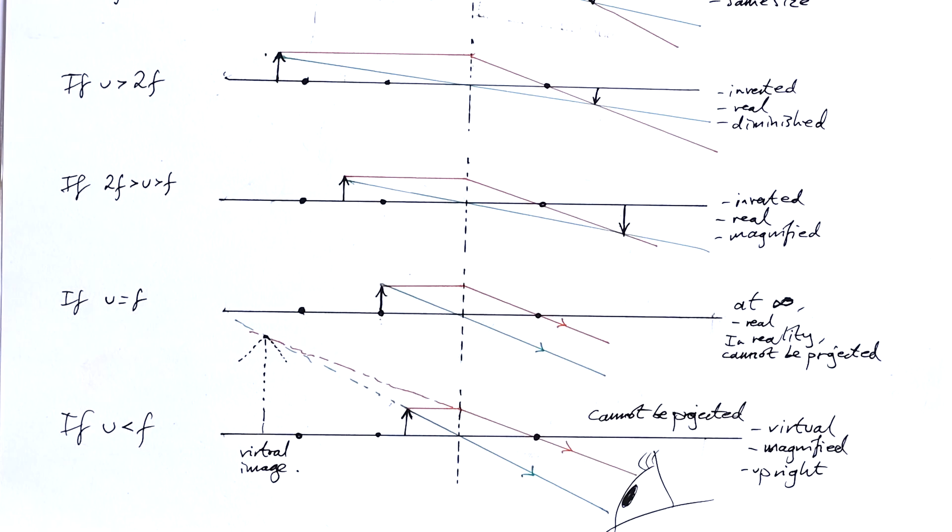An easy way of remembering this: if the light rays converge on the same side as the object, then it's a virtual image and can't be projected. But you can still see this virtual image if you have a lens making these two light rays converge. So we see this phantom image.